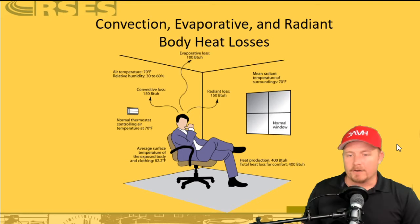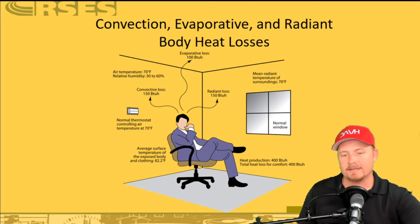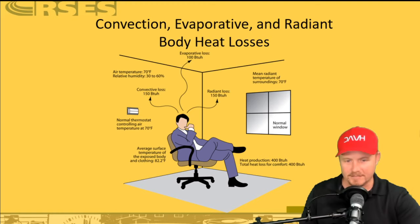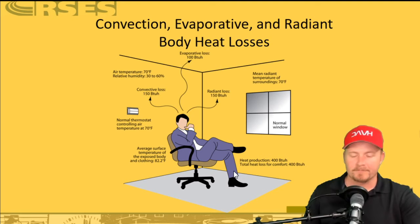This shows some different ways heat is lost or gained. For somebody in a room that's 70°F with relative humidity between 30 and 60 percent: evaporative loss is about 100 BTUs per hour, radiant loss about 150 BTUs per hour, convective loss about 150 BTUs per hour — totaling about 400 BTUs per hour, which represents an adult sitting still doing office work.